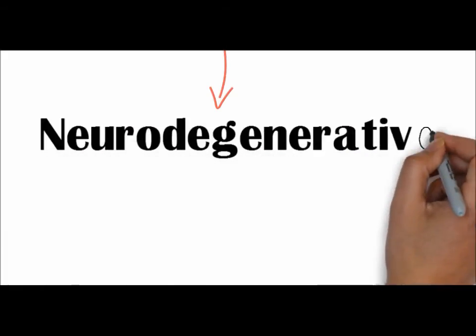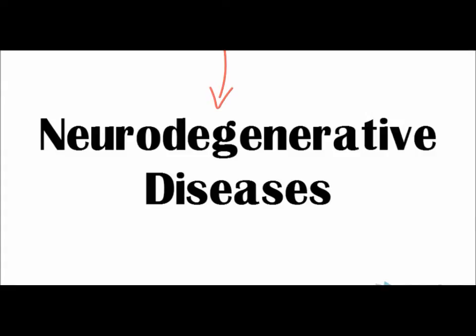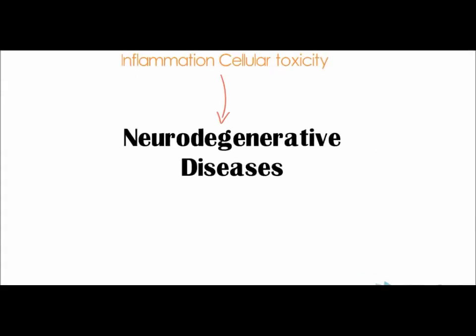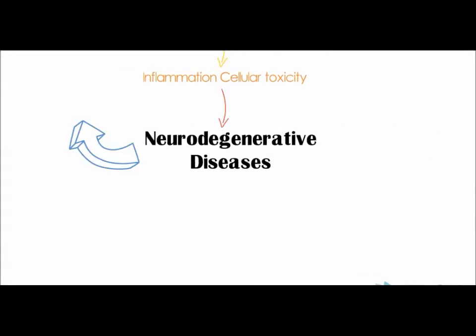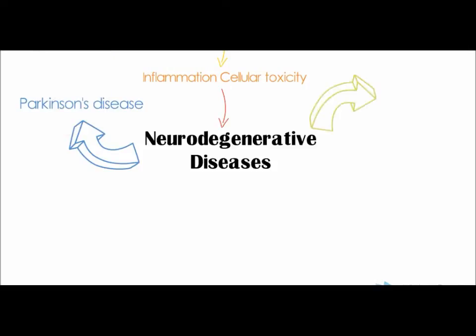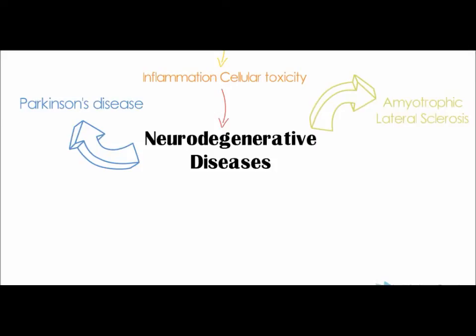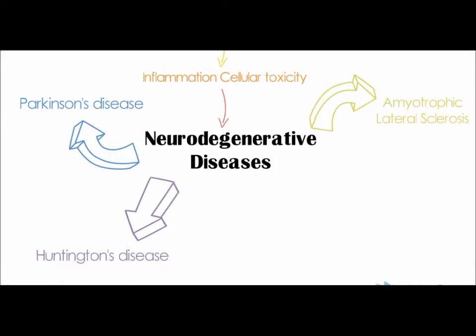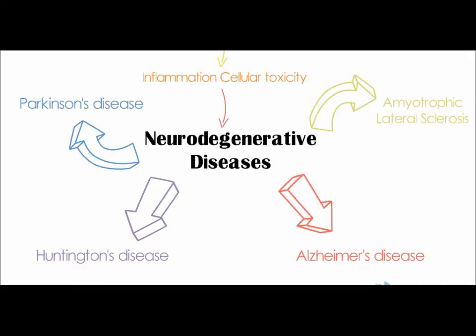All this leads to the onset of neurodegenerative diseases. There are many neurodegenerative diseases. To name a few, we have Parkinson's disease, characterized by impaired movement; amyotrophic lateral sclerosis, ALS, characterized by loss of muscle control; Huntington's disease, which affects muscle coordination; and lastly, Alzheimer's disease. We will now explain more on Alzheimer's disease and the degenerative protein modifications that cause it.